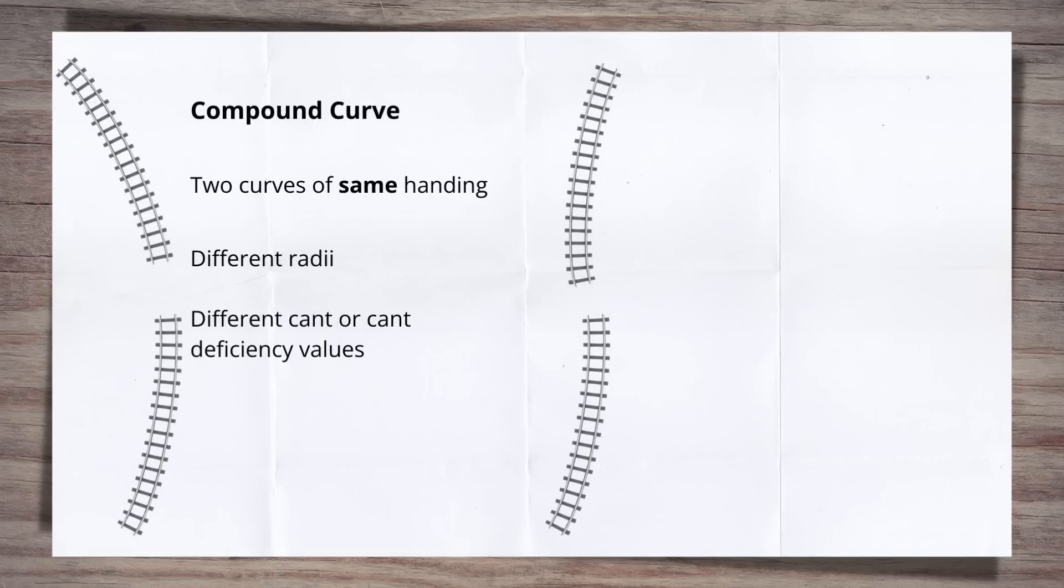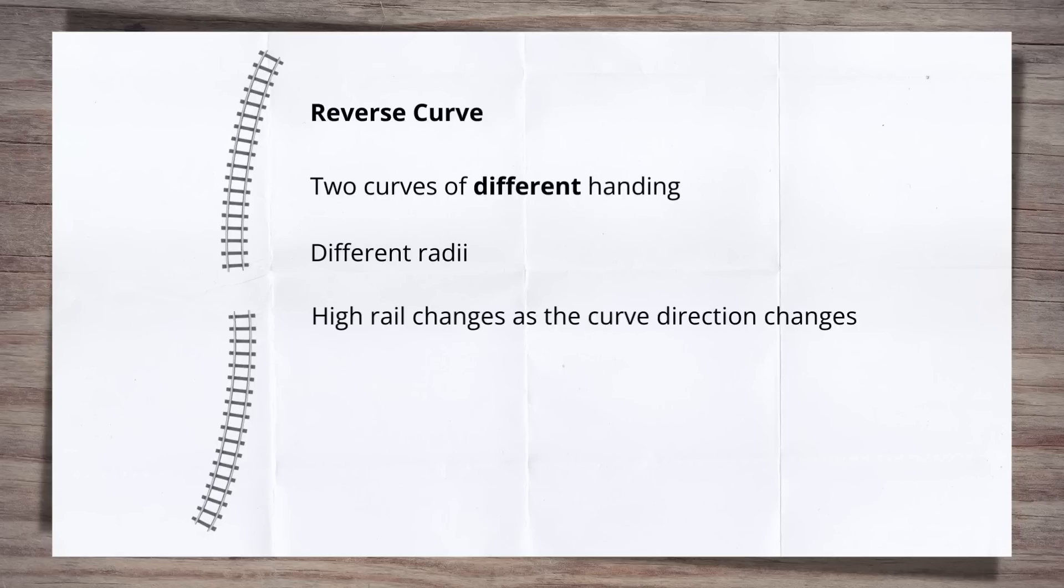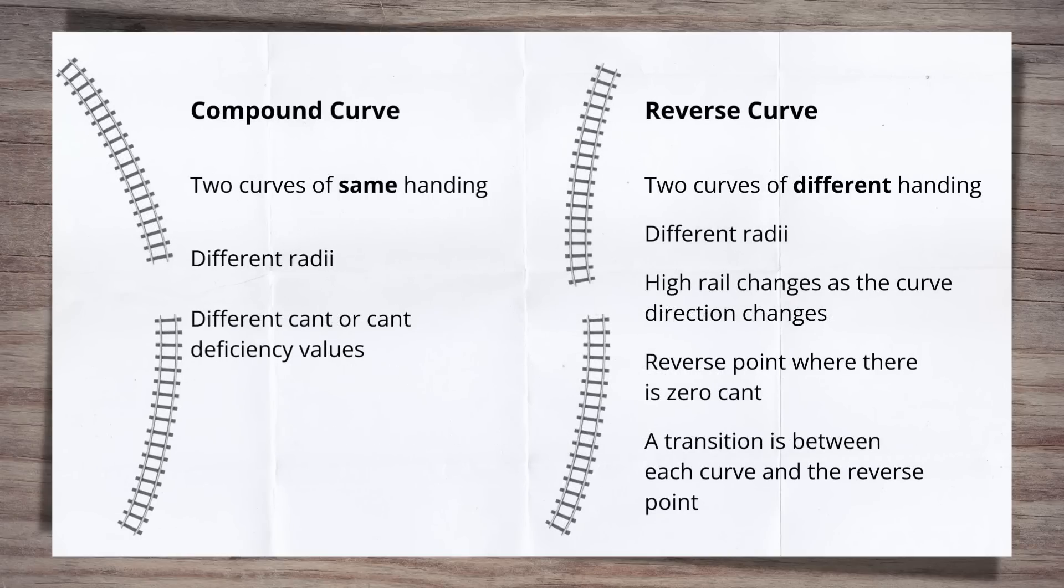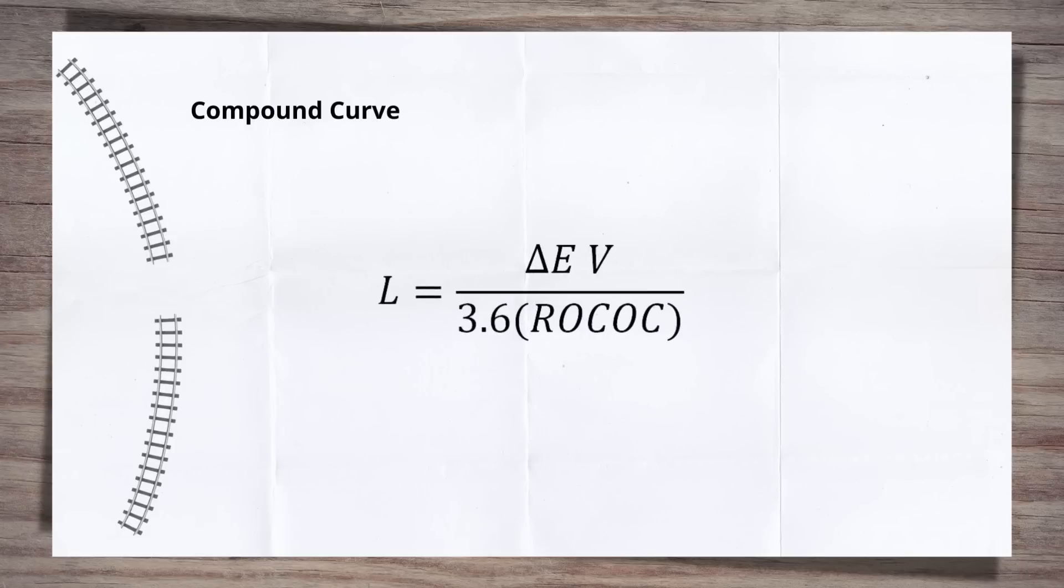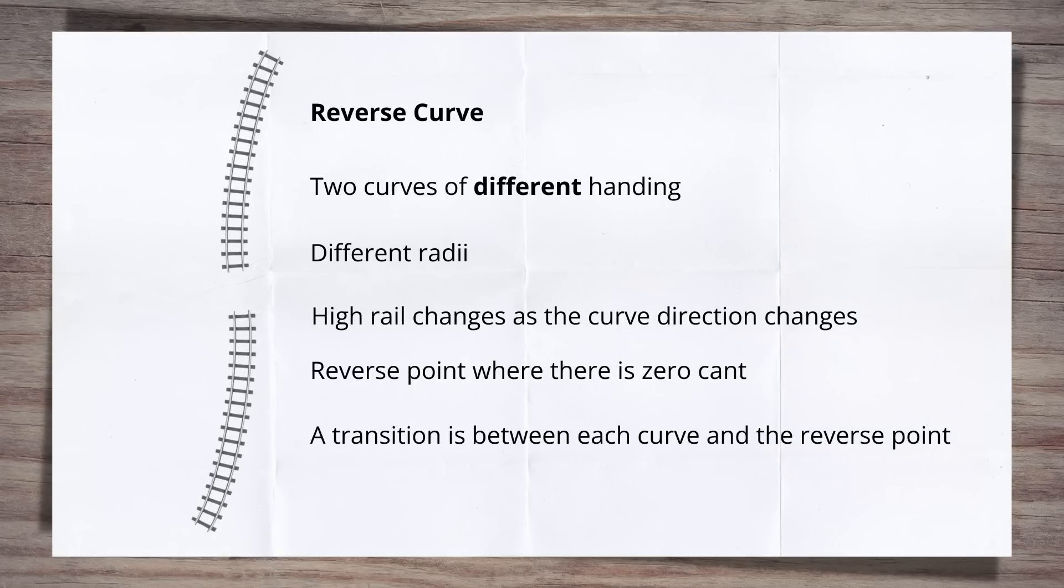A reverse curve is two curves in series, but with different handing. Again, they can have different radii, but they could be the same given the direction change. Within a reverse curve, the rail the cant is applied to, the rail lifted higher, changes as the direction of the curve changes. This is important for when we calculate the changing cant later. Given the cant is changing rail, there needs to be a point where there is zero cant. This is known as the reverse point. Between each curve and the reverse point is a transition. So there are two transitions.